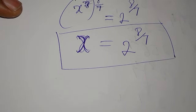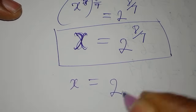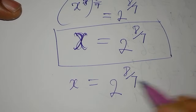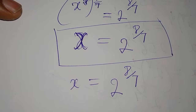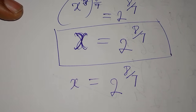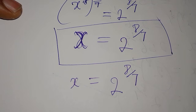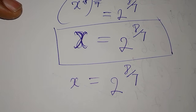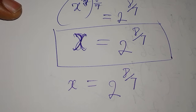So we are correct: x equals 2 to the power of 8 over 7. The question is, which method is easier — the first or the second? Thank you for watching. If you're new to my channel, subscribe so you can always have access to my videos. We do this every now and then.